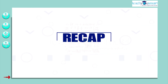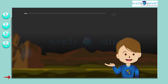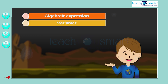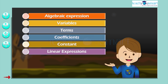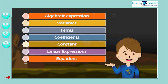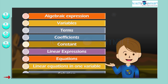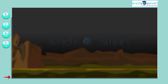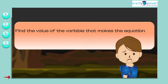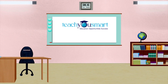Let's have a quick recap. Today we discussed algebraic expressions, variables, terms, coefficients, constants, linear expressions, equations, linear equations in one variable, and the solution of an equation. It's time to check how much you understood with the help of an activity: find the value of the variable that makes the equation true — 8x plus 5 equals 3x plus 25. That's all for now, see you all in the next class.